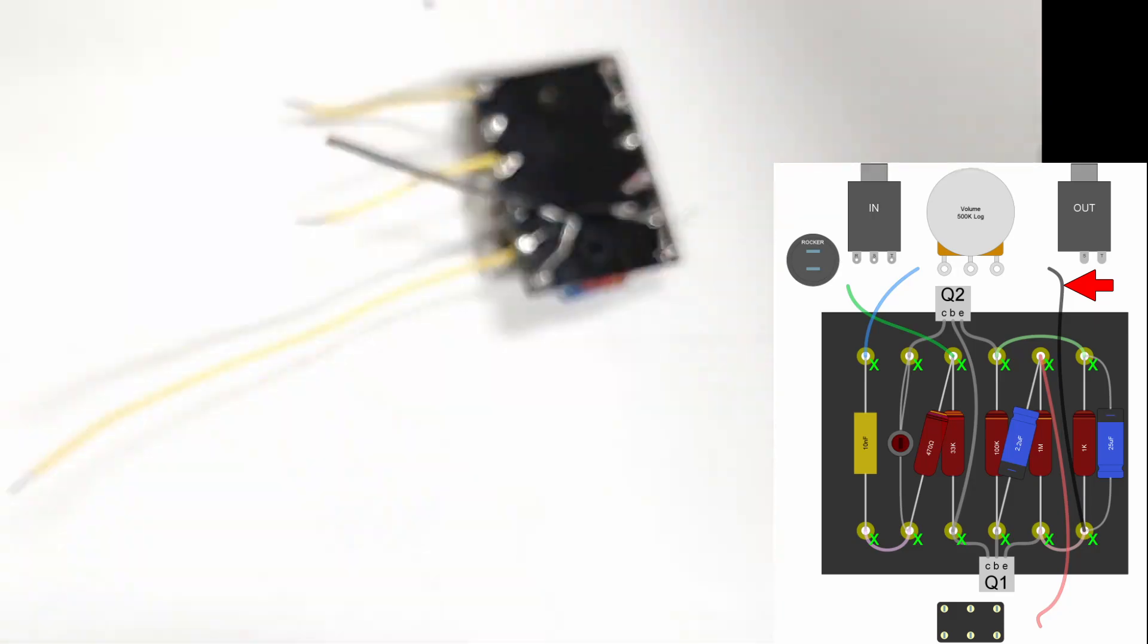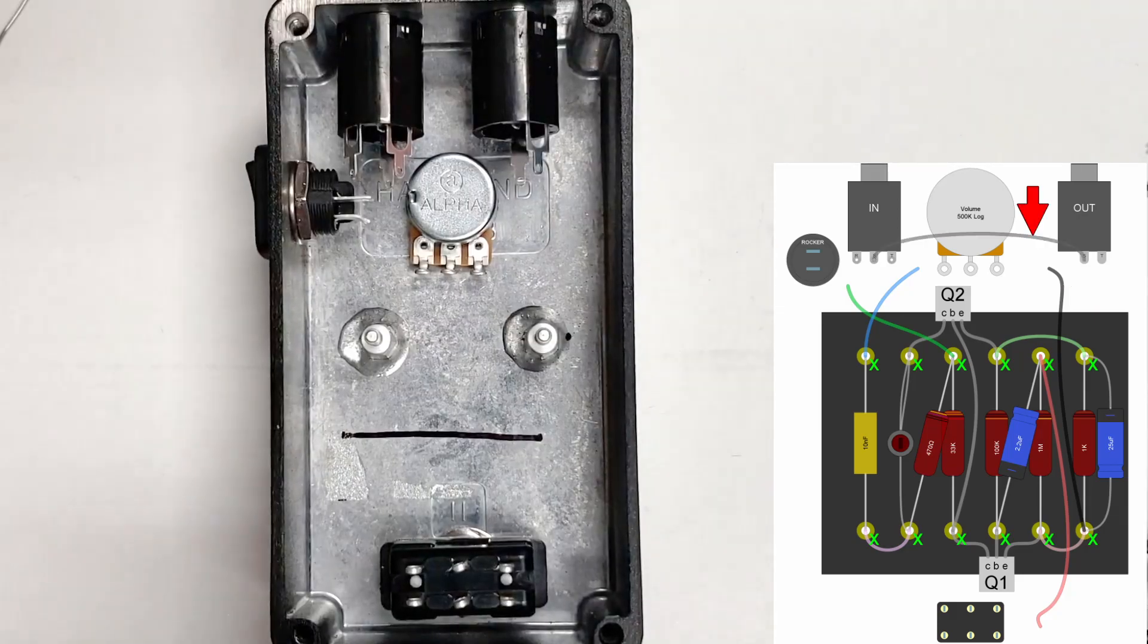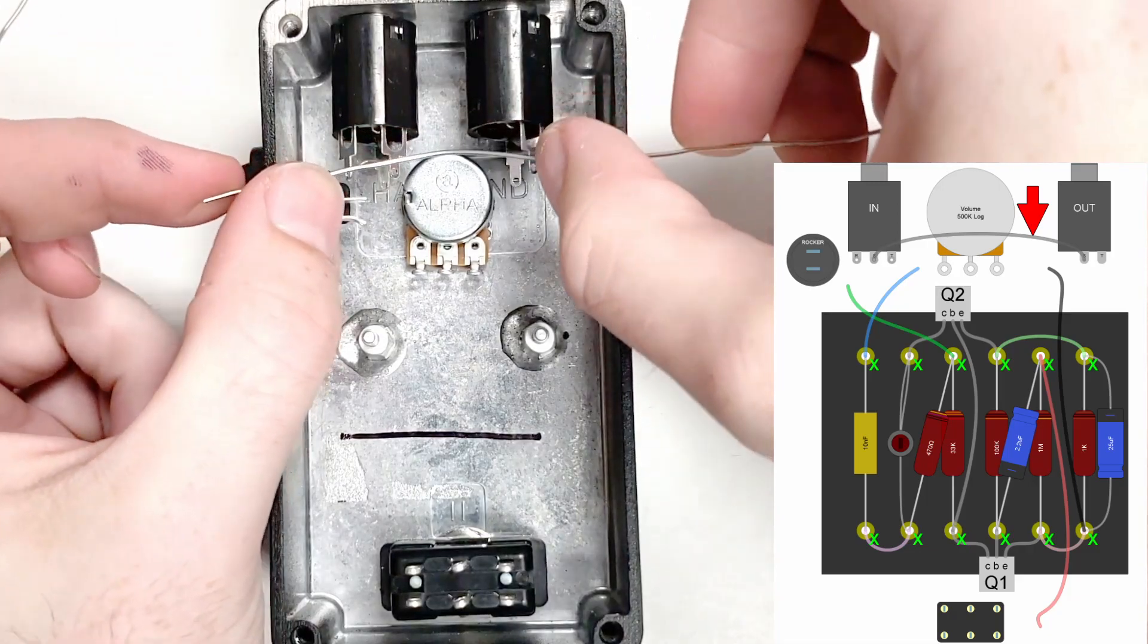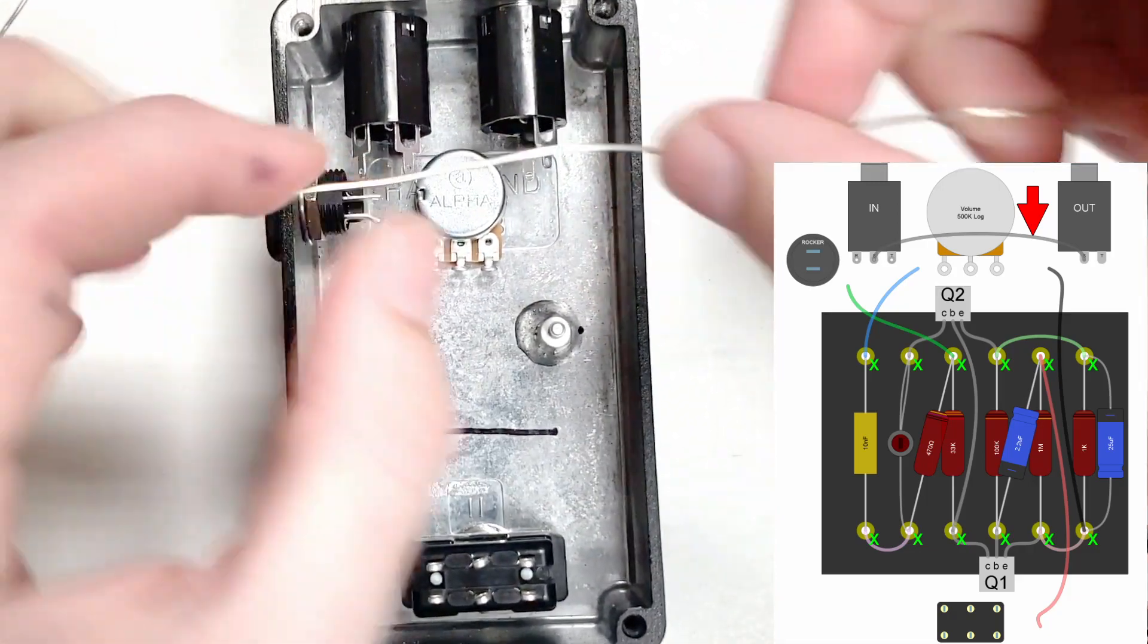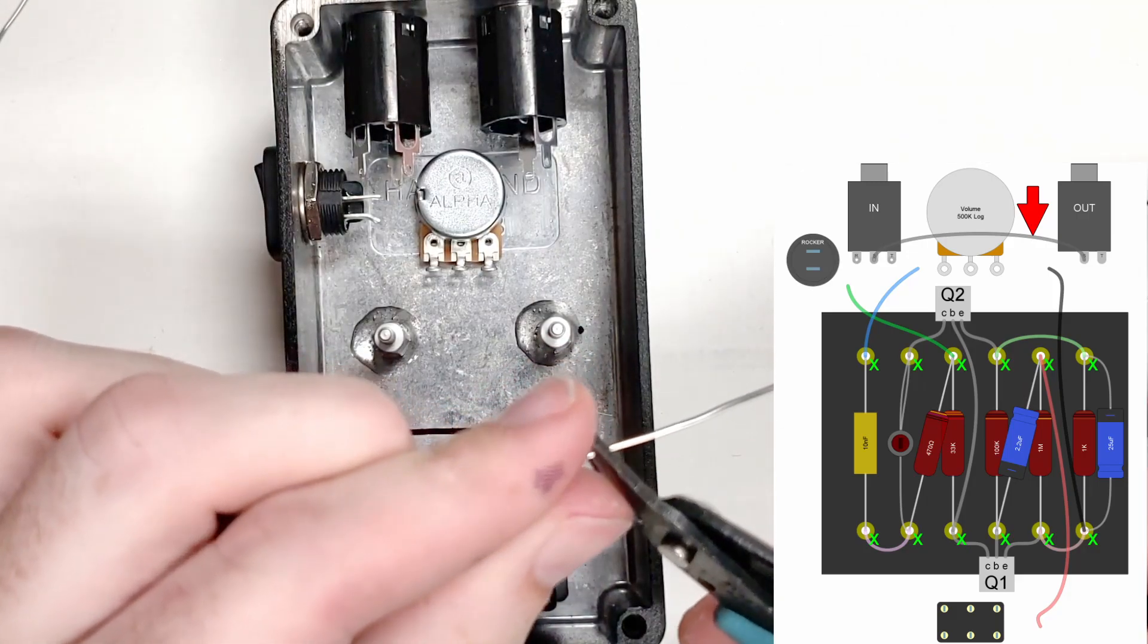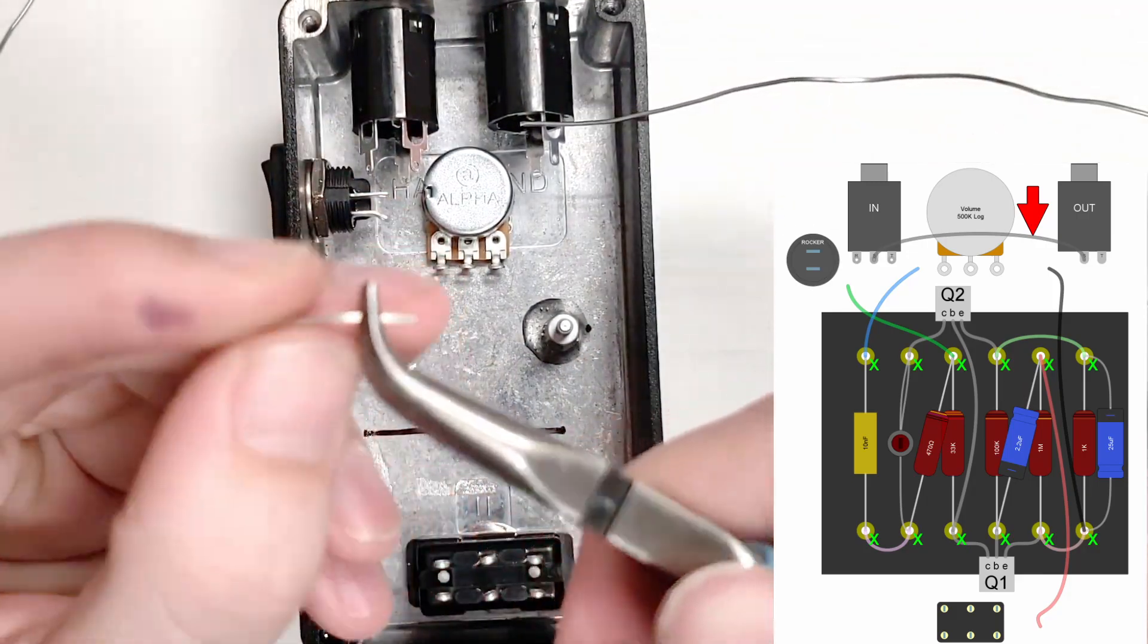Because the potentiometer lugs are underneath the board when it's installed, all connections to the pot lugs should be made before installing the board, and lug one connects to ground. There's a ground connection on the board it can be wired to, but because the board is not installed yet, it's easier to make the ground connection elsewhere. We're going to connect it to the grounded bus wire installed between the jack sleeves.